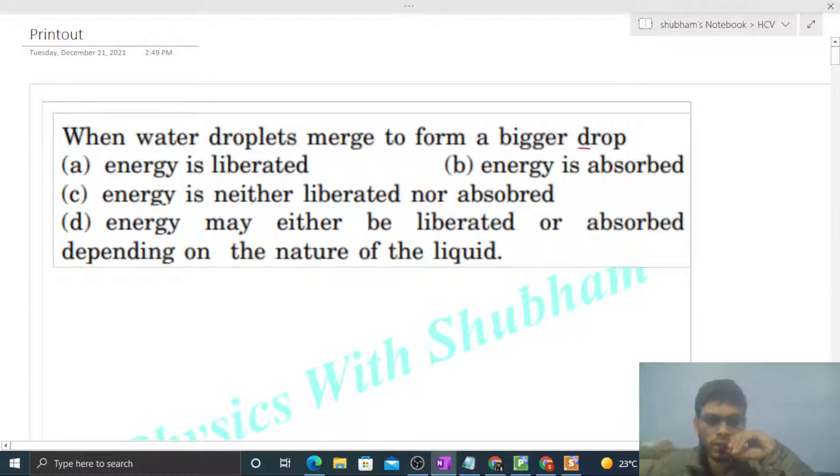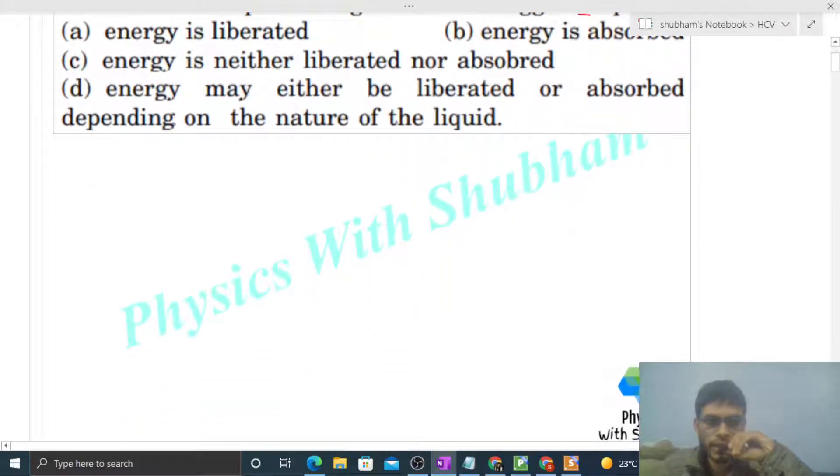So let's say initially we have n number of water droplets, something like this. N number of water droplets, and the surface area of the first droplet is A1.